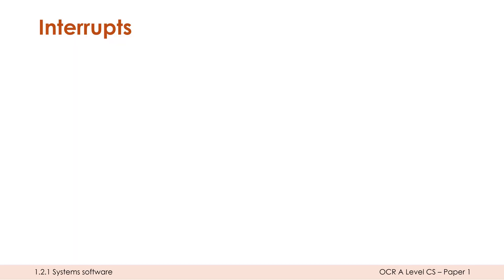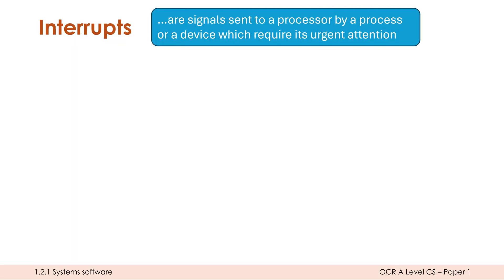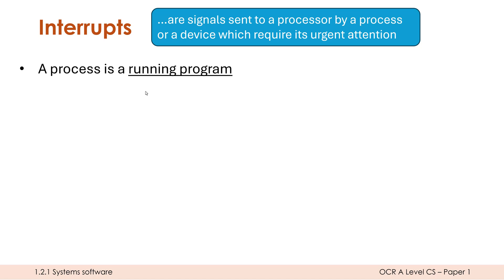Let's now talk about interrupts. Interrupts are signals sent to a processor by a process or a device which require its urgent attention — the processor is urgently required to look at something else. Note the slightly annoying similar words: a processor is the CPU, while a process is just a running program — currently in memory, being used by the user, with the CPU actively executing it. So we can think of a process as software. Therefore, interrupts can be generated by software and also by devices, which are hardware.